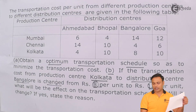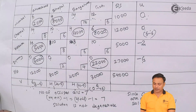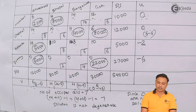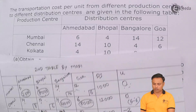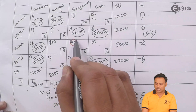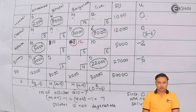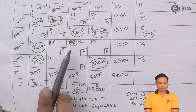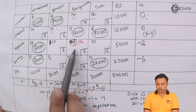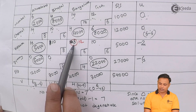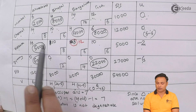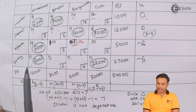The final solution of Part A is shown here on screen. We have the solution with all delta values positive. Now, the change involves the route from Kolkata to Bangalore, where the current cost is 8 rupees per unit. This cost is being changed to 12 rupees per unit — an increase in cost from Kolkata to Bangalore.